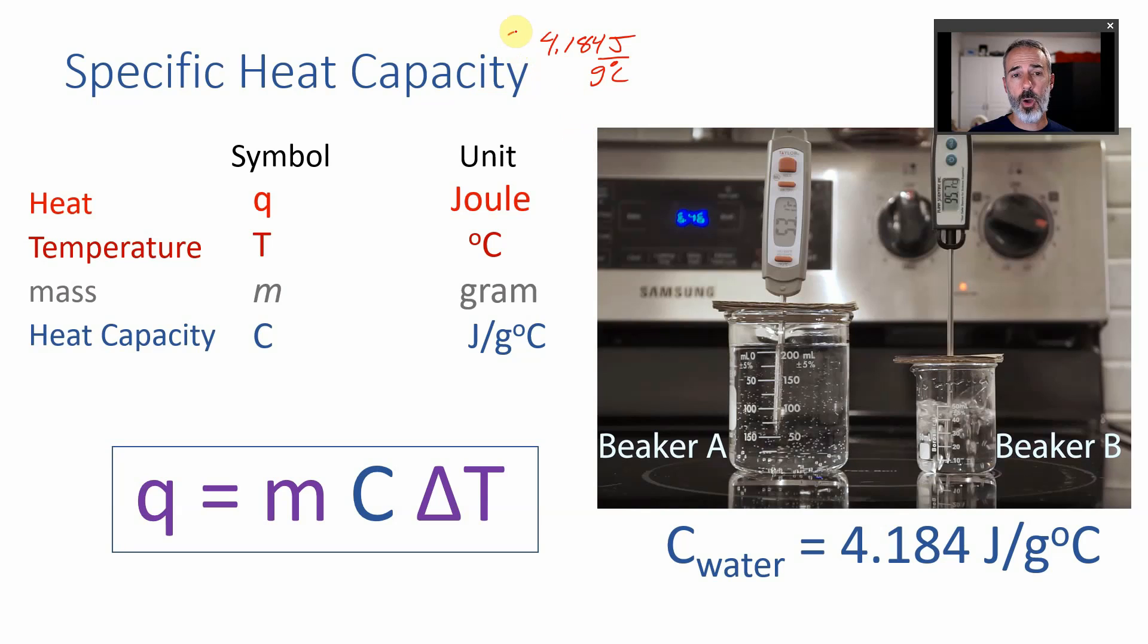If you wanted to know what the heat capacity was in terms of moles you could just convert it. For water there's 18.02 grams per one mole. That would cancel our grams. And if I do 4.184 times 18 I would get the number of joules that are needed per mole of water.